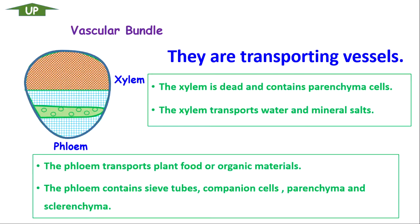The phloem contains many different cells, such as the sieve tube — shown here with little holes inside — the companion cells, parenchyma, and sclerenchyma. Those are the cells of the phloem. The parenchyma cells are living, and the sclerenchyma aids in support of the phloem.